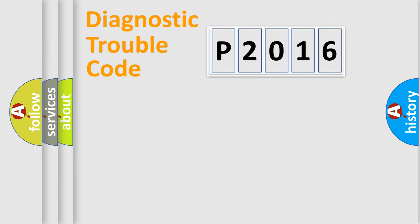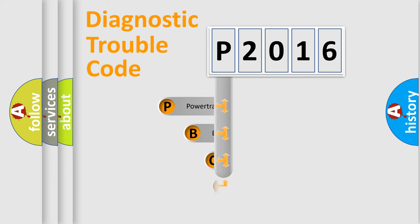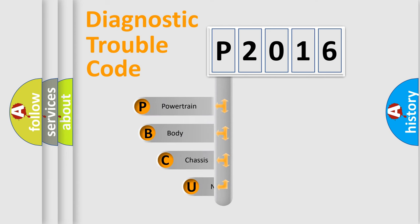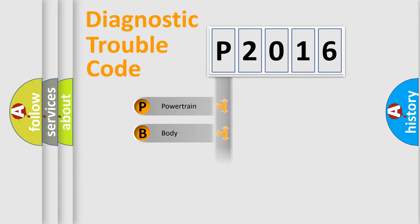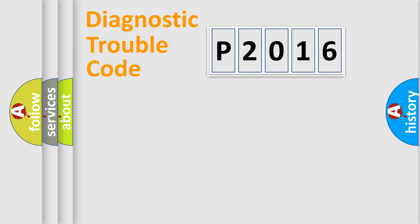First, let's look at the history of diagnostic fault code composition according to the OBD2 protocol, which is unified for all automakers since 2000. We divide the electrical system of the automobile into four basic units: Powertrain, Body, Chassis, and Network.